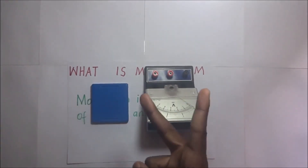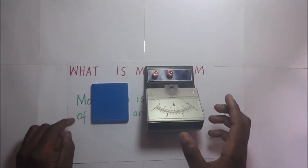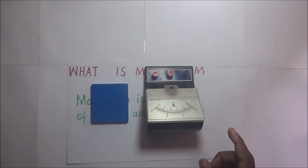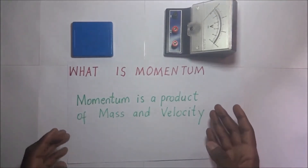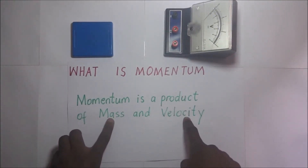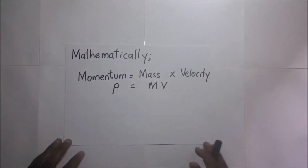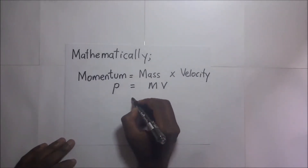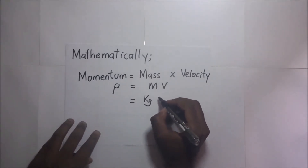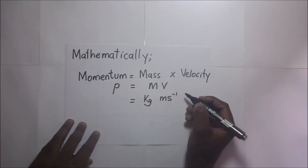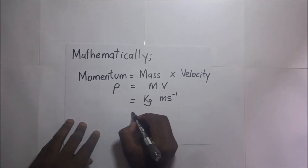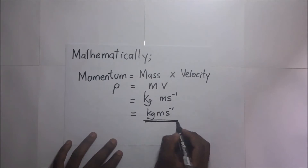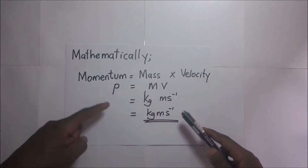Momentum as a terminology is affected by two factors: the mass of the object and the velocity of the object. That is why by definition momentum is the product of mass and velocity. Mathematically, momentum p equals mass times velocity: p = mv. The SI unit for mass is kilograms, and the SI unit for velocity is meters per second. So the SI unit for momentum is kilogram meters per second.